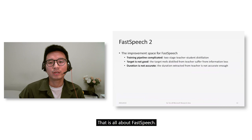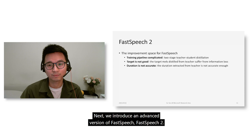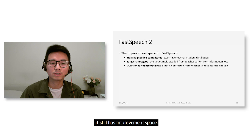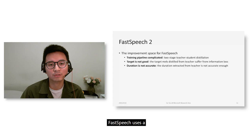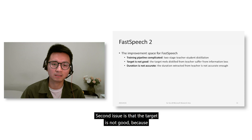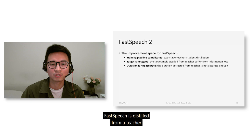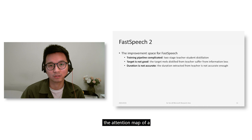Next, we introduce an advanced version of FastSpeech — FastSpeech 2. Although FastSpeech achieved good success in both research and product, it still has room for improvement. The first problem is that the training pipeline is complicated because FastSpeech uses a two-stage teacher-student distillation. The second issue is that the target is not ideal, as the target mel spectrogram used by FastSpeech is distilled from a teacher and suffers from information loss.